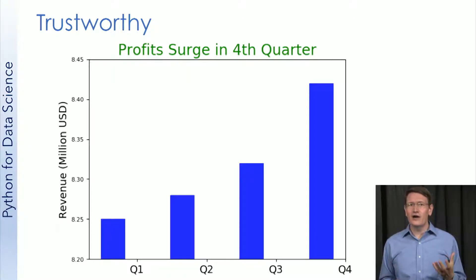I suspect the author of such a chart of trying to be dishonest or at the very least misleading. They're trying to convince me of something which isn't true. Let's just look at all the flaws here. Surge? 2% is a surge? The title is simply misleading.